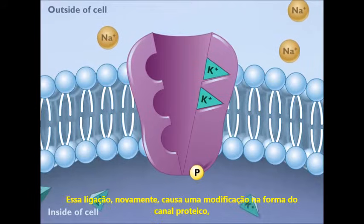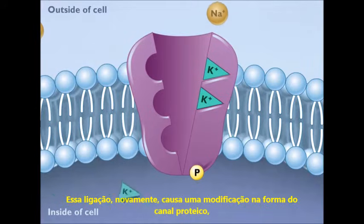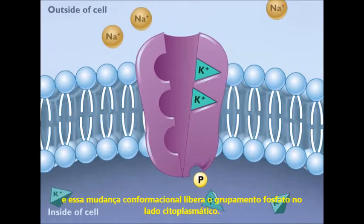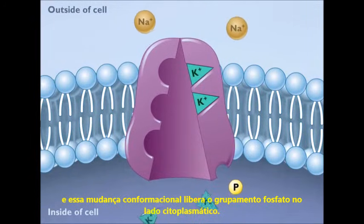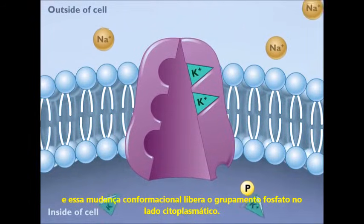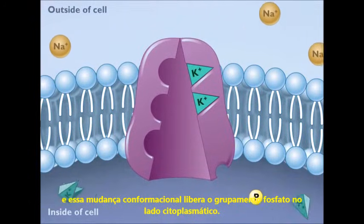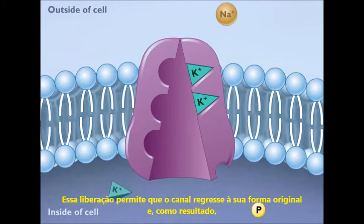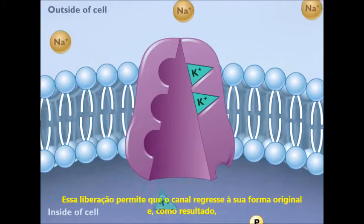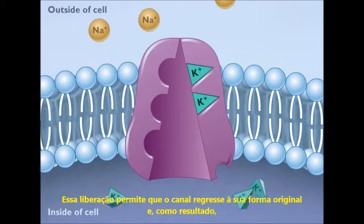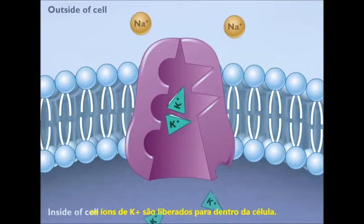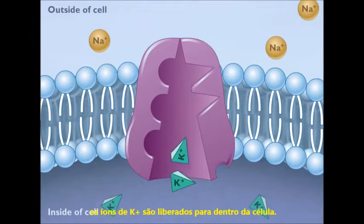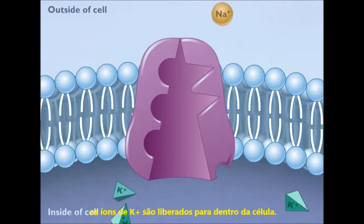This binding again causes a change in the shape of the protein channel, and this conformational change releases the phosphate group on the cytoplasm side. This release allows the channel to revert to its original shape, and as a result, the potassium ions are released inside the cell.